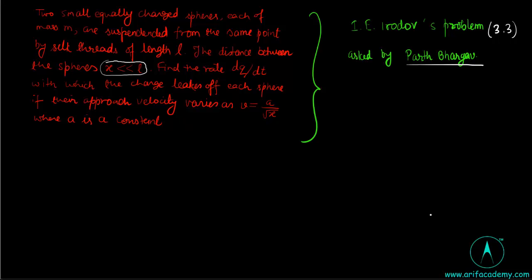Find the rate with which the charges leak off each sphere if their approach velocity varies as V equal to A upon under root X, where A is a constant.